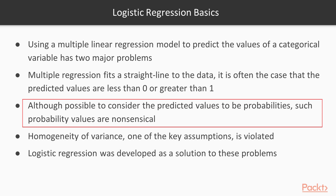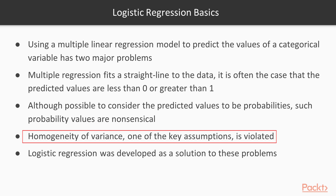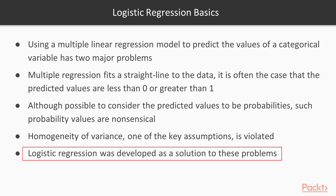The second problem is that although it's possible to consider the predicted values not as the actual values themselves but as probabilities, the probability values are really not going to make that much sense. The other potential problem is that when you have categorical outcome variables, the assumption of homogeneity of variance — which is a key assumption of linear regression — is always going to be violated. That's why logistic regression was developed as a solution to overcome these problems.